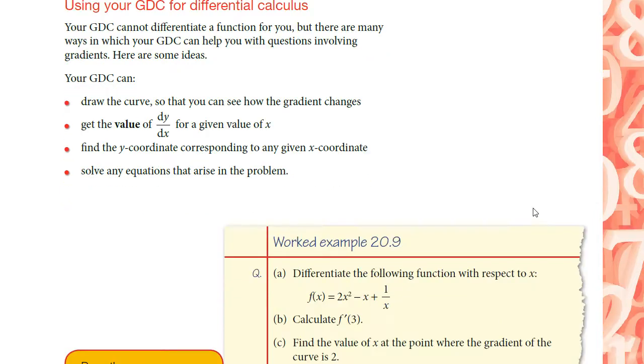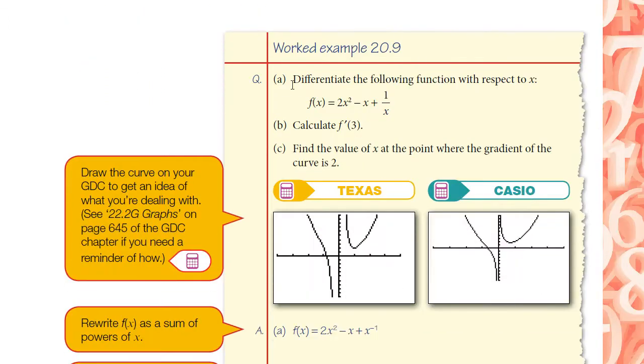This is from the book page 595, Example 29. You've been given a function f(x) = 2x² - x + 1/x. You need to differentiate this function with respect to x. So differentiate means finding the rule that would give you the gradient of the tangent at any point. After that we'll have to find f'(3), meaning the slope or the gradient of the tangent where x equals 3. I'll skip this part c here in this video.